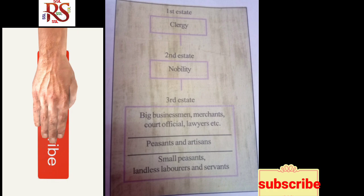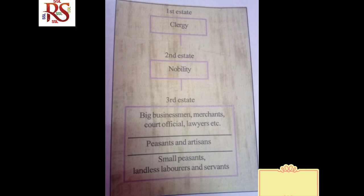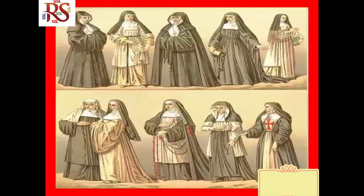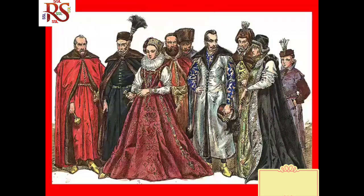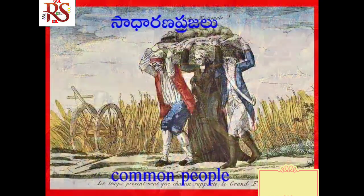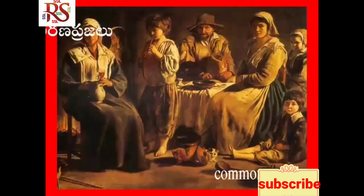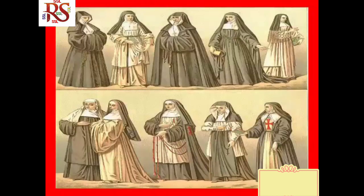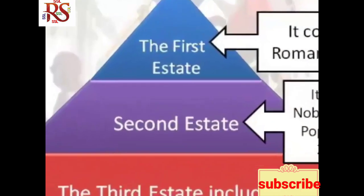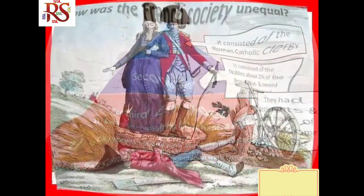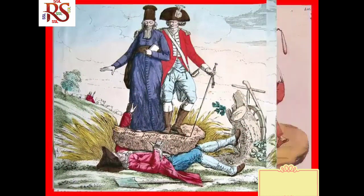Such as the cost of maintaining the court. French society was divided into three estates. In the 18th century, the first estate was the clergy, the second estate was the nobility, and the third estate included the remaining sections of society such as merchants, lawyers, peasants, laborers and servants. Peasants were about 90% of the total population of France.